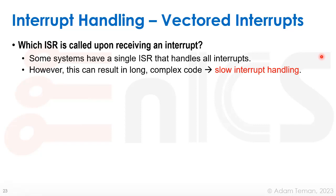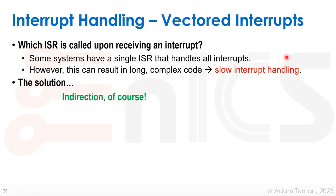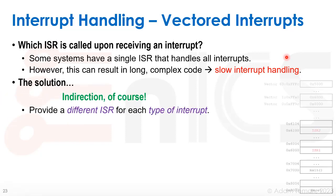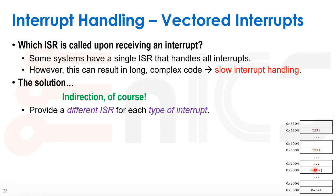Let's talk about vectored interrupts. Which ISR do we call when we receive an interrupt? Different types of interrupts require different handling. Some systems have a single ISR that handles all interrupts — RISC-V supports this — but it can result in long, complex code, and we want interrupt handling to be very fast. The solution is indirection, as with most problems in computer engineering. We provide a different ISR for each type of interrupt, stored at different locations in memory.